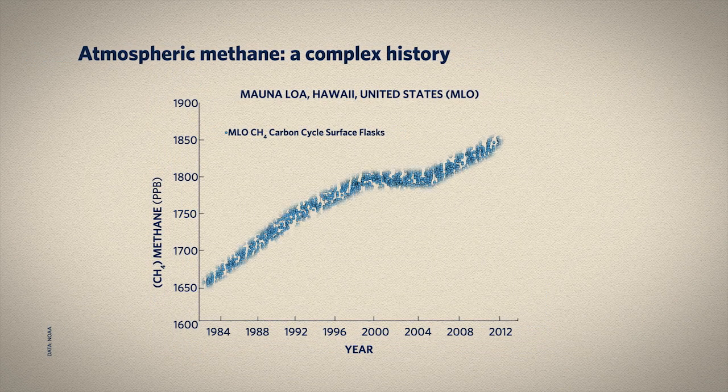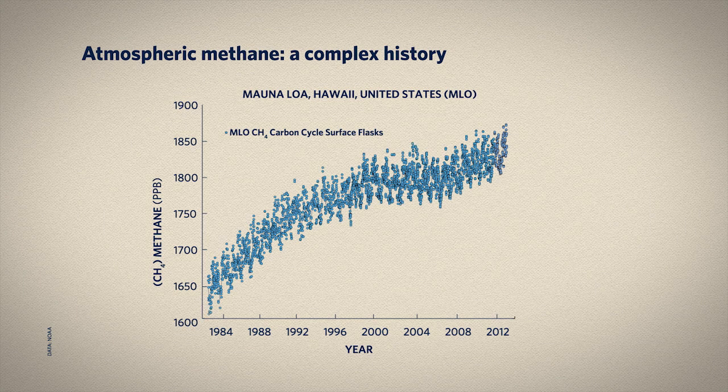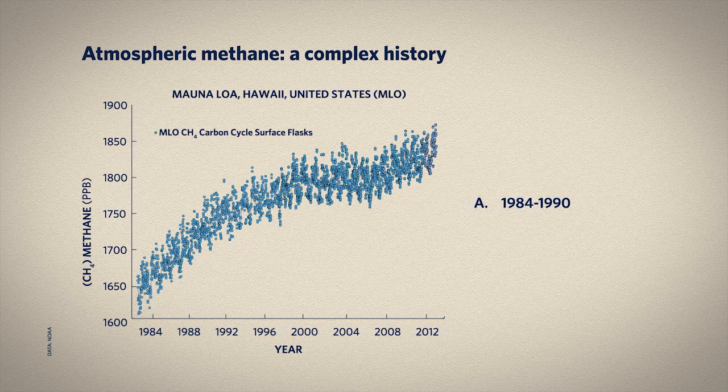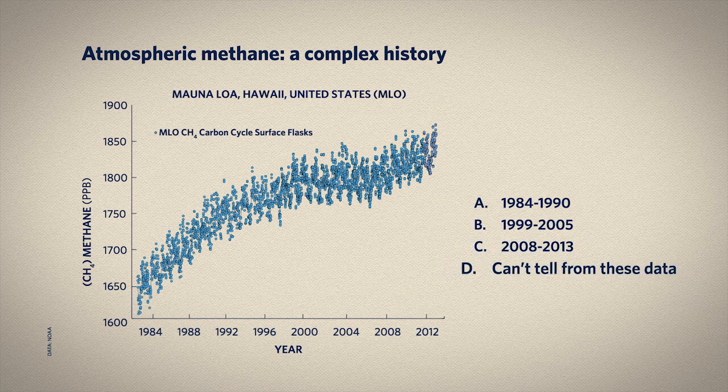Here's some interesting data. Since the early 1980s, when people started making these measurements directly from air samples, atmospheric methane concentrations rose, then they plateaued, then they started to rise again. Here's a stock and flow question for you: during which time period were inflow and outflow of methane to and from the atmosphere closest to equal? Was it about 1984 to 1990? Or 1999 to 2005? Or 2008 to 2013? During a time period when inflow and outflow are approximately equal, that means the stock isn't going to change much. So the middle time period, about 1990 to 2005, is the best of the given choices for inflow to equal outflow.